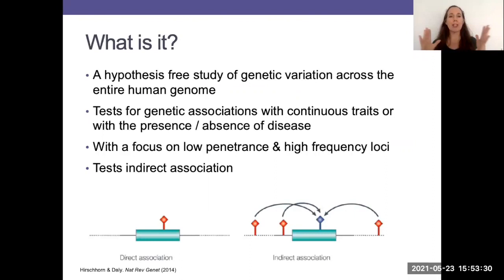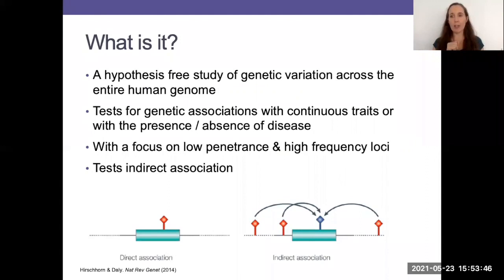So what are they? They are a hypothesis-free study of genetic variation across the entire human genome. We are testing for genetic associations at millions of points across the genome with continuous traits or binary traits — cases and controls, the presence and absence of disease. We're going to be focusing on common genetic variation: genetic variants that have a small effect but are reasonably frequent in the population.